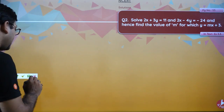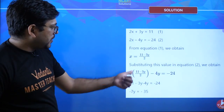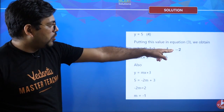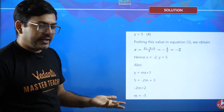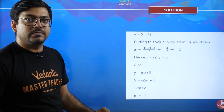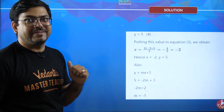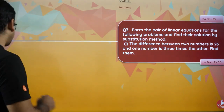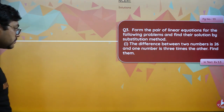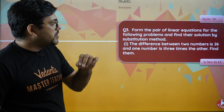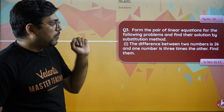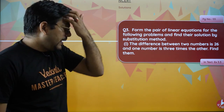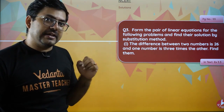The answer is: x value is -2, y value is 5, and m value is -1. Now let's move on to the next question. The next question says: form the pair of equations for the following problems and find their solution by substitution method. We will use substitution, but first we need to learn how to form the word problem equations.